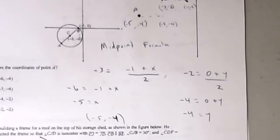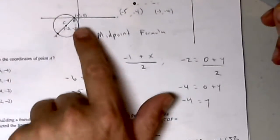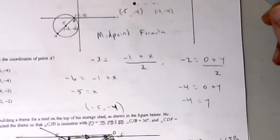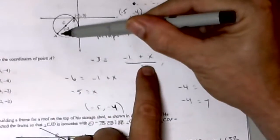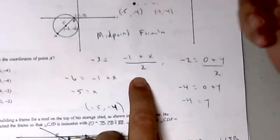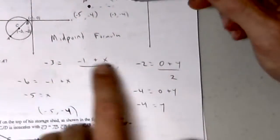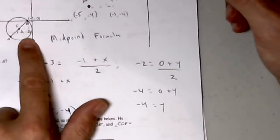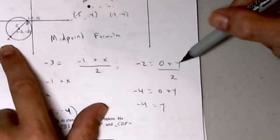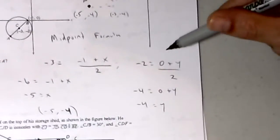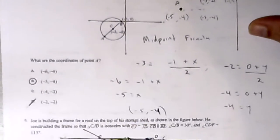The other way to do this is with the midpoint formula: point C is the midpoint between B and A. The x-coordinate of C is −3, which equals the average of −1 and x, giving x = −5. The y-coordinate of C is −2, which equals (0 + y)/2, giving y = −4. So point A is (−5, −4).